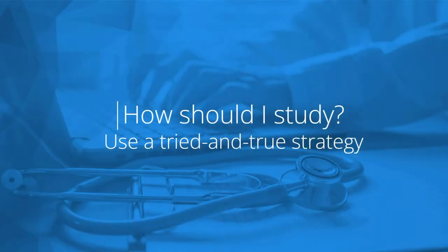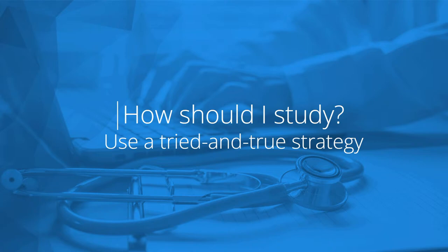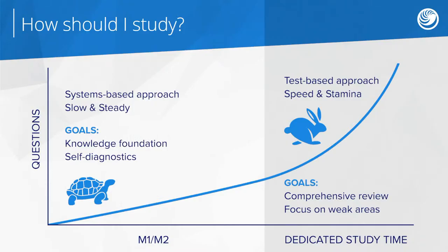Here's a question we get all the time: how should I study? I'm going to start by talking about a tried and true strategy that has helped countless medical students succeed. But here's the main takeaway: start early, practice often, and aim for two times through the QBank. You may be familiar with the story of the tortoise and the hare from Aesop's Fable — the hare overestimates his abilities, takes a nap, and the tortoise plods along slow and steady, overtakes the hare, and wins the race. This is true during the acquisition of knowledge phase, but you also need to be speedy like the hare when it comes time for test taking.